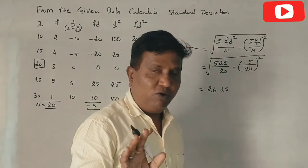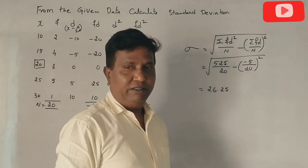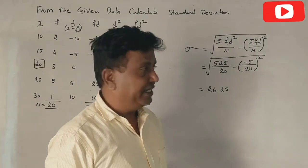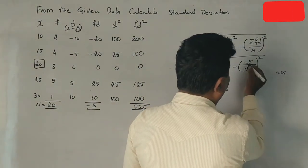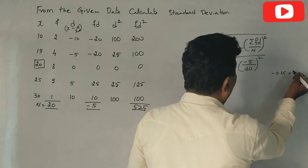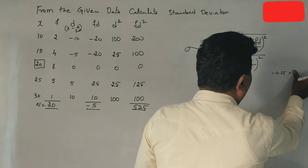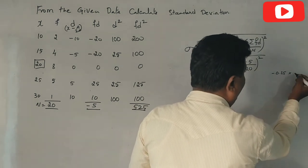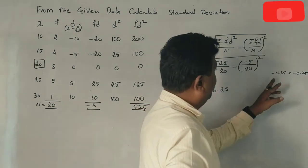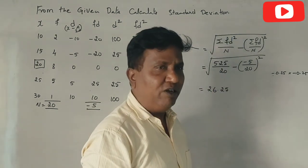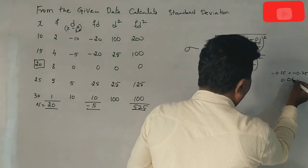Now for the second term: Σfd divided by n is minus 5 divided by 20, which equals minus 0.25. Since it is squared, minus into minus is plus, so 0.25 into 0.25 equals 0.0625.